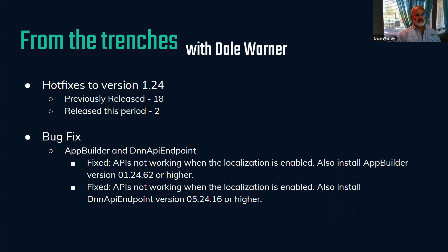Both of these are really one fix: API endpoints were not working correctly when localization was enabled. So if you had multiple languages enabled on your system, this set of fixes solves that. If you're in that circumstance, you should install both hotfixes — one for App Builder and one for the DNN endpoint. Hotfixes, if they don't apply to you, you don't need to install them. But if you're trying to get your API to work because you have localization enabled, then you would install that.